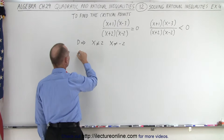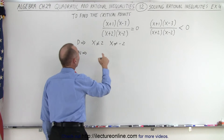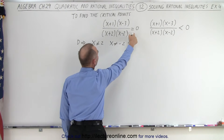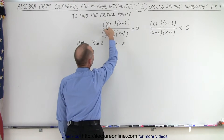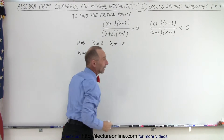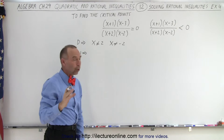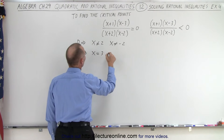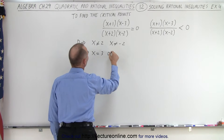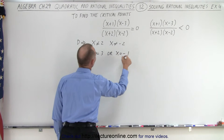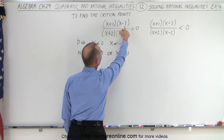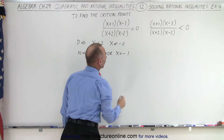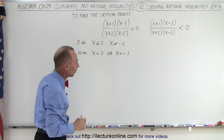Looking at the numerator, we can see that if x equals three or if x equals negative one, then the numerator equals zero. That means the fraction will equal zero, and those are therefore also critical points.